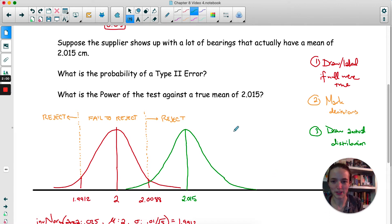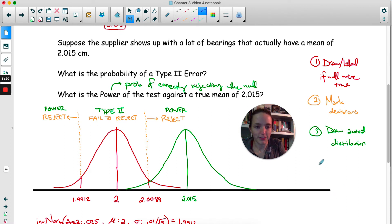Now I'm going to add to the labels up here, the reject, the fail to reject, and the reject. And I'm going to write what type of error each of those is. Now if we fail to reject the null when we should have rejected, that's a type 2 error. So this section here is a type 2 error. These other two sections were actually correct. We're correctly rejecting the null. Now when you correctly reject the null, that is called power. So power is actually a good thing. It's the probability of correctly rejecting the null. So power is a good thing. We want a large power because we want a good chance that we correctly reject the null.